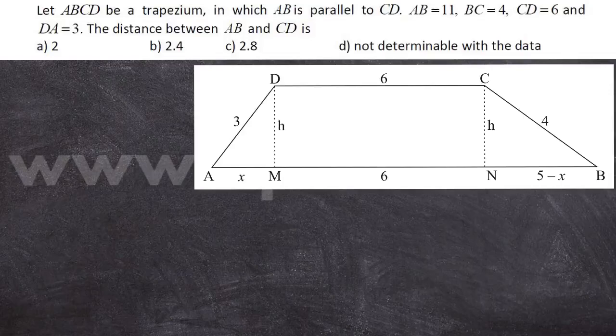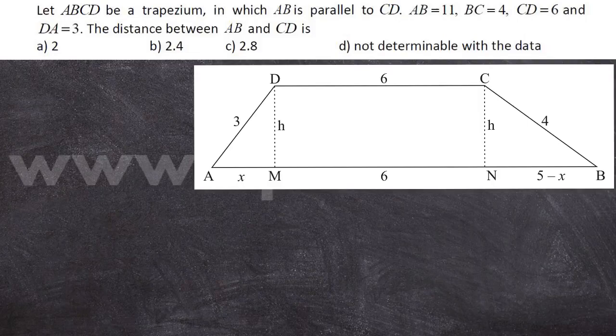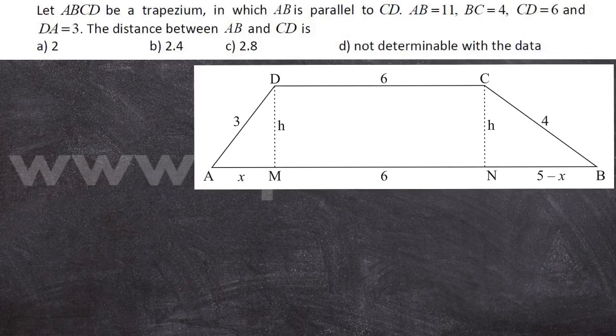Let ABCD be a trapezium in which AB is parallel to CD, AB is equal to 11, BC is equal to 4, CD is equal to 6 and DA is equal to 3. The distance between AB and CD is: